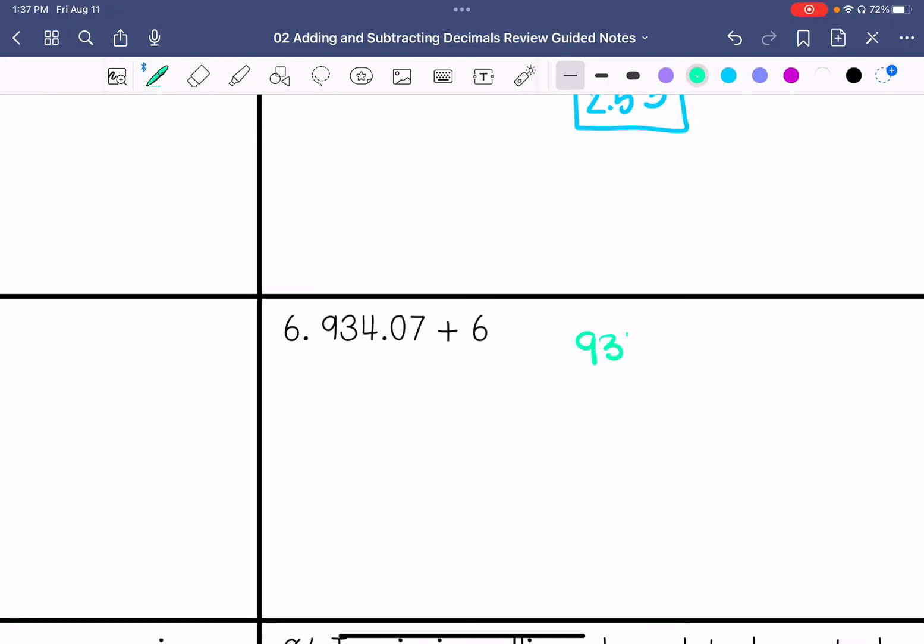Then we have 934.07 plus 6. We're going to add our placeholders. 7 plus 0 is 7, 0 plus 0 is 0, 4 plus 6 is 10. 3 plus 1 is 4, and then 9 plus nothing is 9. Bring the decimal straight down. 940.07 is our answer. You can add placeholders right there if you would like. It's not going to change the answer. The only time I required it is if it's to the right.